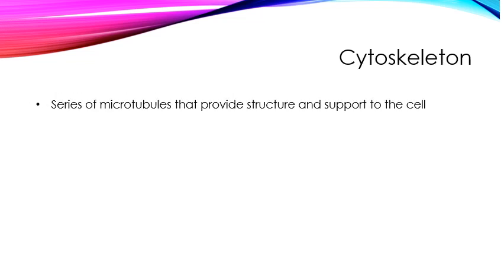The cytoskeleton is a series of microtubules that provide structure and support to the cell. It is basically like a little tube-like structure. Like our physical skeleton supports our entire body, these little tubes form a skeleton, a structure, a support for the cell's body.